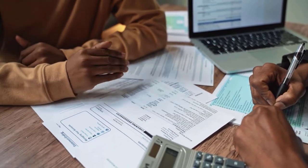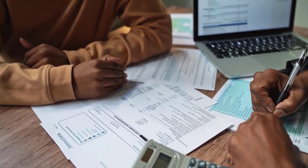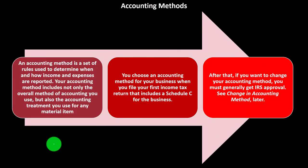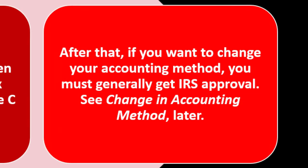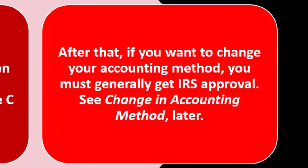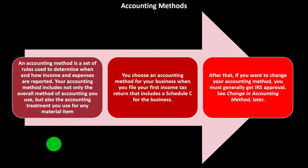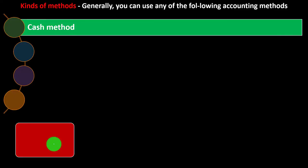Make sure you have the right checkbox checked off, because if it's not, it causes problems down the line — big headaches. After that, if you want to change your accounting method, you must generally get IRS approval. You need to ask for approval. See 'Change in Accounting Method' for more detail.